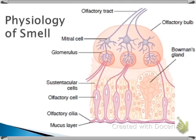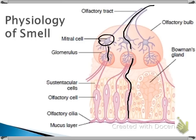When the receptors are activated, depolarization occurs and an action potential is sent up through the cell, up the axons, through the cribriform plate, and into the olfactory bulb. When it reaches the bulb, it synapses on the dendrites of cells called mitral cells. This synapse causes the mitral cells to depolarize and fire their own action potential. Their axons then come together to form the olfactory tract, which is essentially a superhighway of mitral cell axons that travels up to the brain.